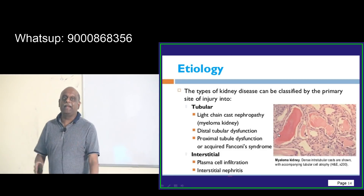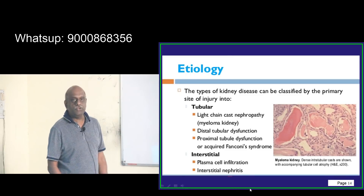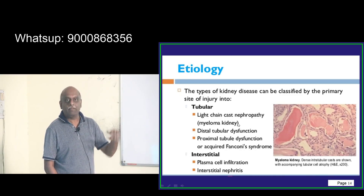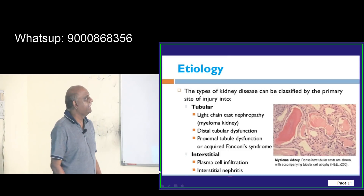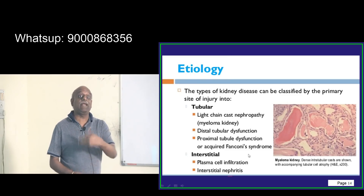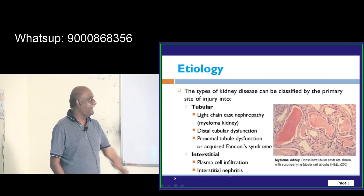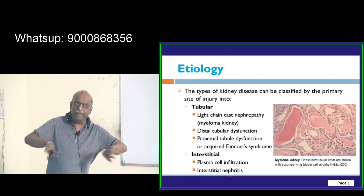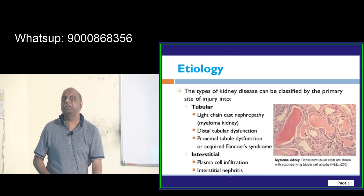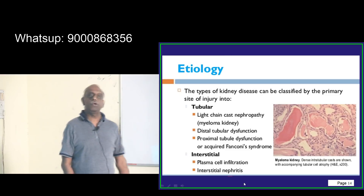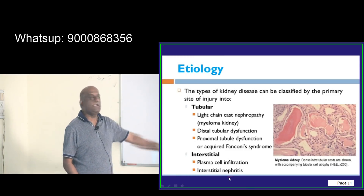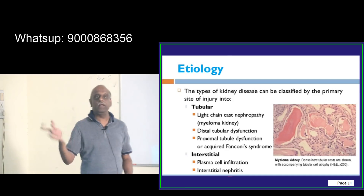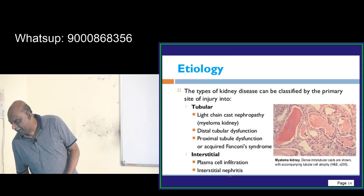If you look at kidney injury, it can be broadly divided into tubular injury and interstitial pathology. In the tubular type, typically light chain cast nephropathy like myeloma kidney occurs — light chain casts get deposited in the kidney. There can also be proximal tubular dysfunction like Fanconi syndrome, where there is aminoaciduria and proximal tubule dysfunction, because the proximal tubule is where amino acids and glucose are fully reabsorbed. Interstitially, you can have plasma cell or neutrophilic infiltration into the interstitium, then called interstitial nephritis.